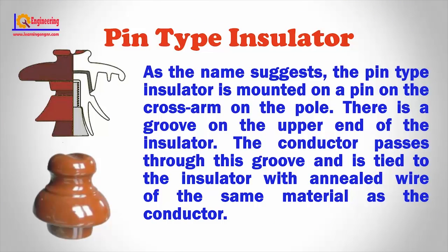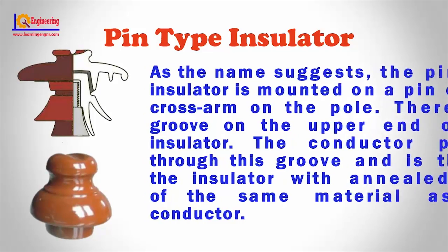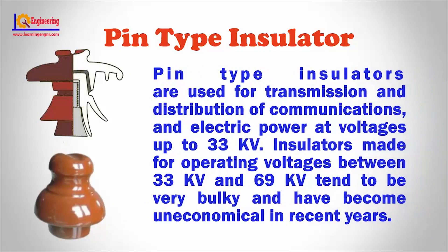Pin type insulator: As the name suggests, the pin type insulator is mounted on a pin on the cross arm on the pole. There is a groove on the upper end of the insulator. The conductor passes through this groove and is tied to the insulator with annealed wire of the same material as the conductor. Pin type insulators are used for transmission and distribution of electric power at voltages up to 33 kV.